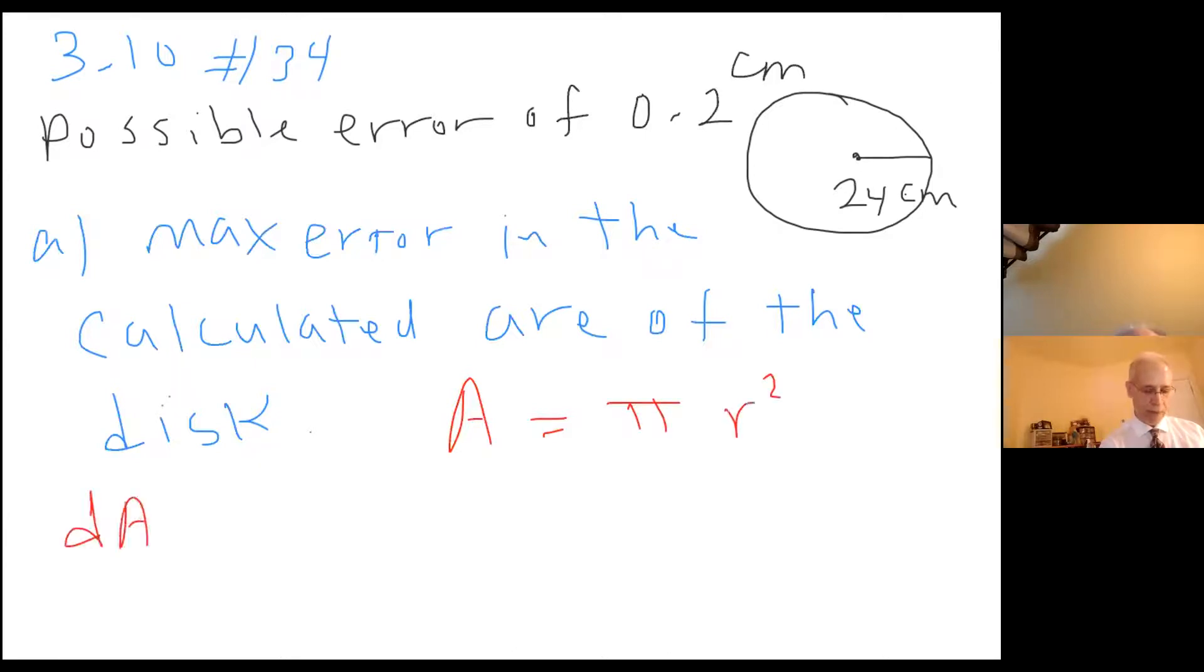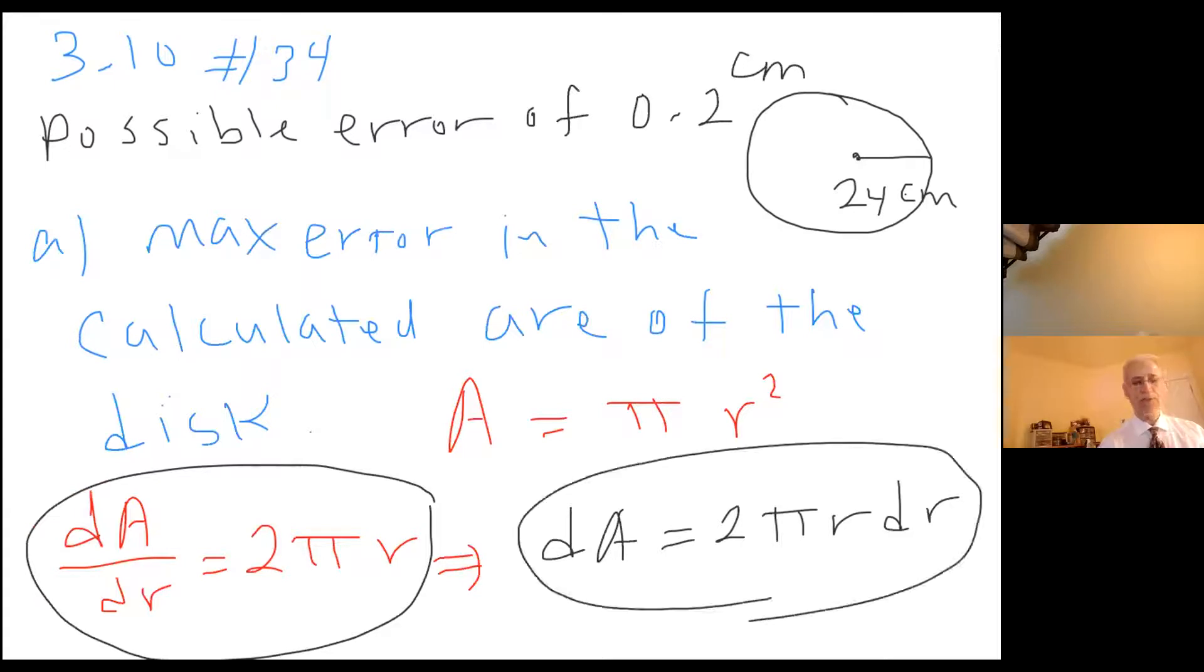So dA/dr equals 2 pi r, and this follows that dA equals 2 pi r dr. Notice that this was derivative and this is differential.